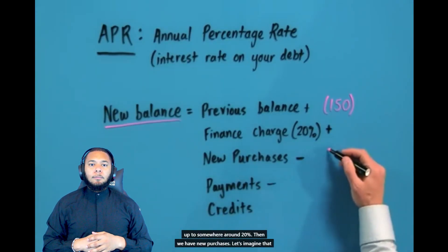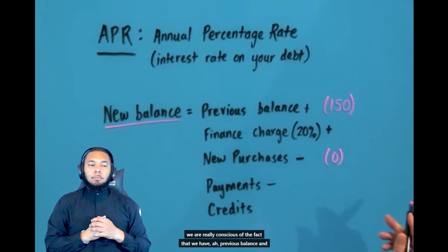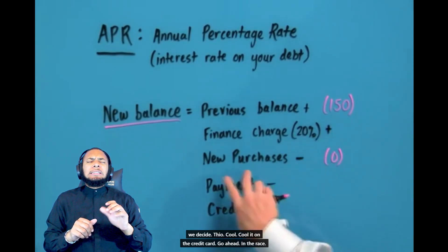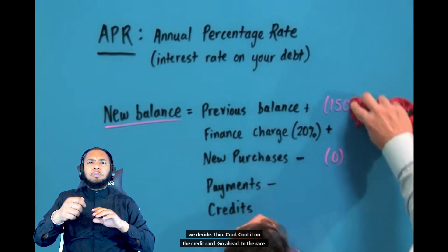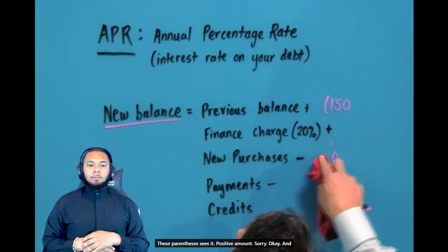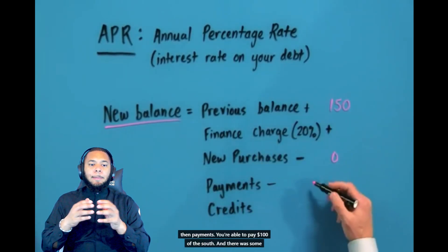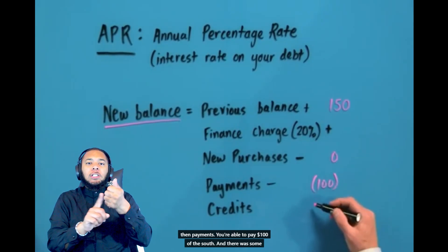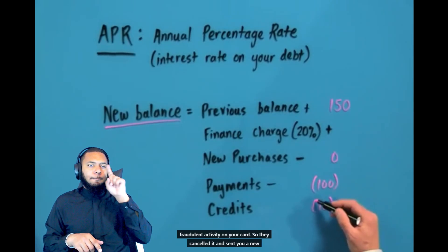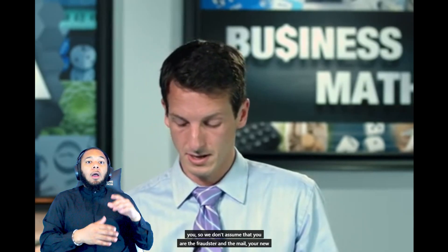Then we have new purchases. Let's imagine that we are really conscious of the fact that we have a previous balance and we decide to cool it on the credit card. And then payments — you're able to pay $100 of this off. And there was some fraudulent activity on your card, so they canceled it and sent you a new one, and credited you the $10 that somebody stole. You dropped your card in the grocery store aisle, someone took it and spent $10. You called them up, reported the fraudulent activity, they said sure no problem, and mailed you a new card.